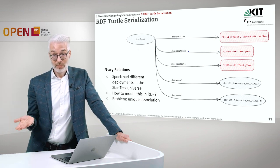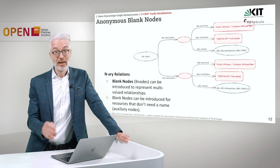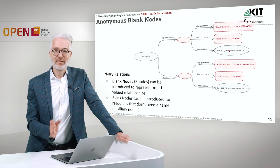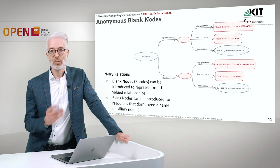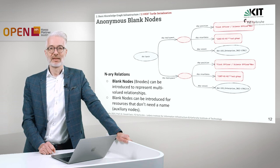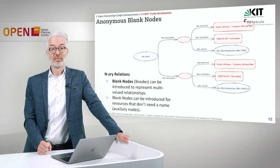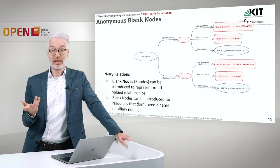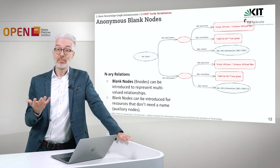Blank nodes are used for existential assumptions, but also for n-ary relations. In the graph, we use two blank nodes to associate the correct vessel to the correct start date, and another blank node for the second vessel, second start date, and position. In both deployments, Spock served as first officer or science officer. Blank nodes can be introduced to represent multi-valued n-ary relationships, and for resources that don't need a name — they are auxiliary nodes for aggregation. They cannot be addressed from outside because they don't have a URI.